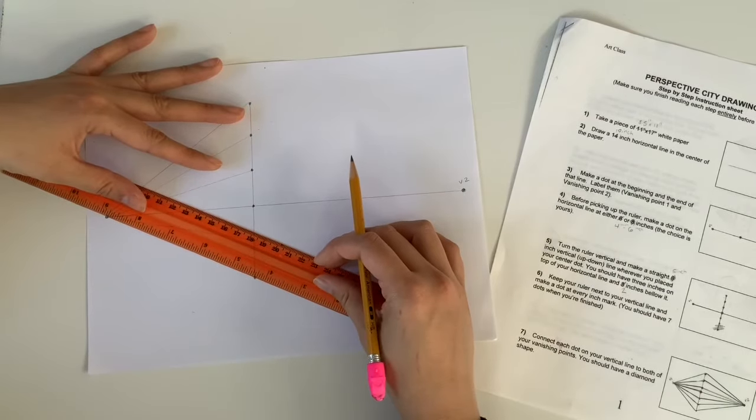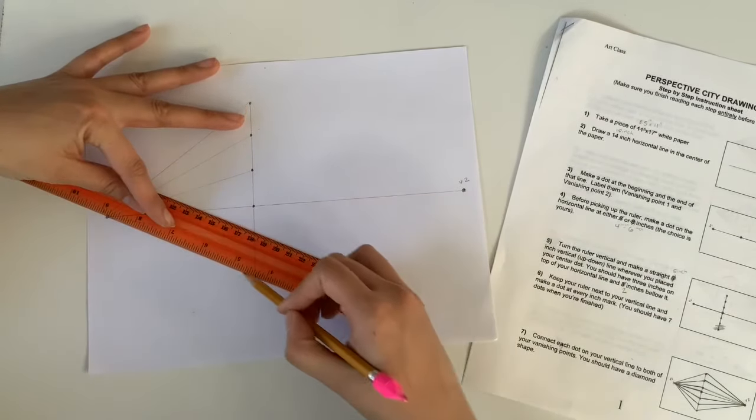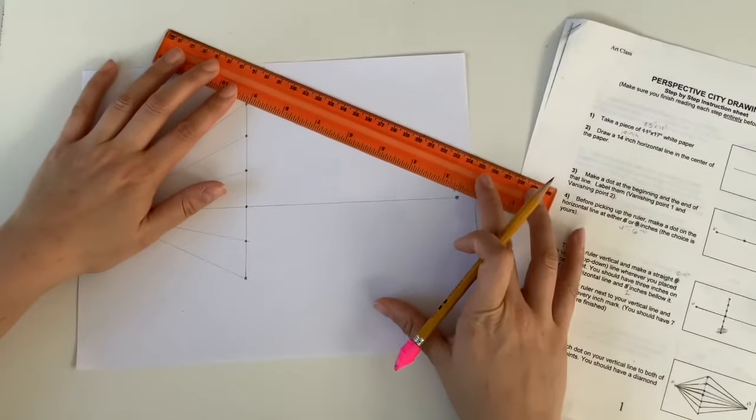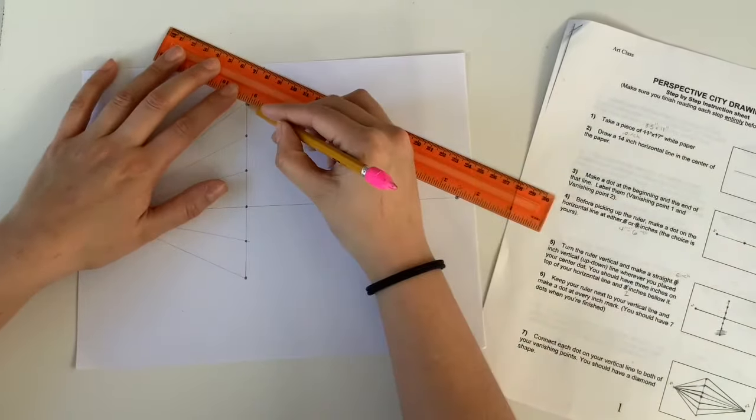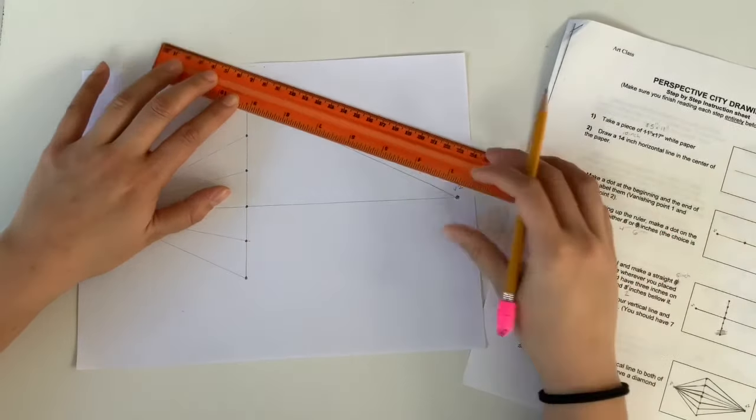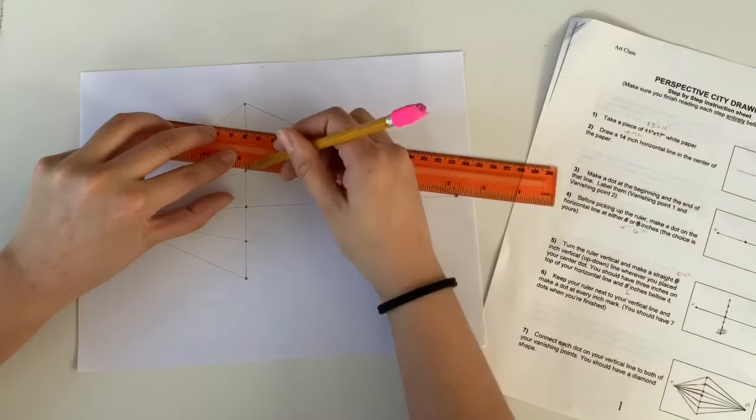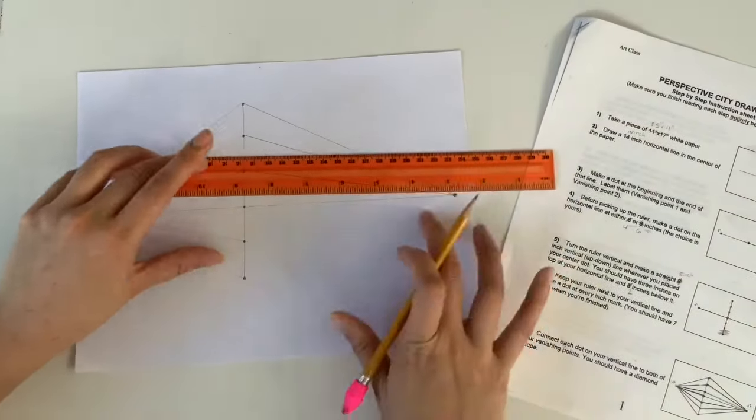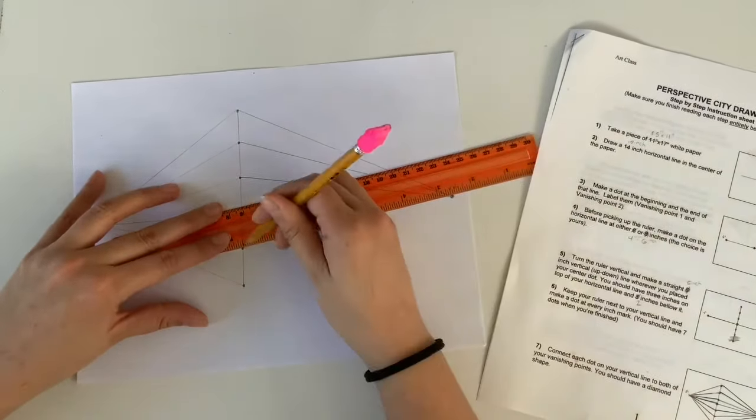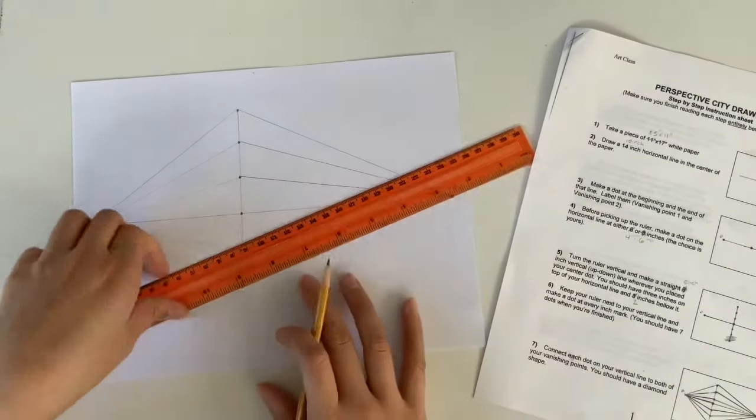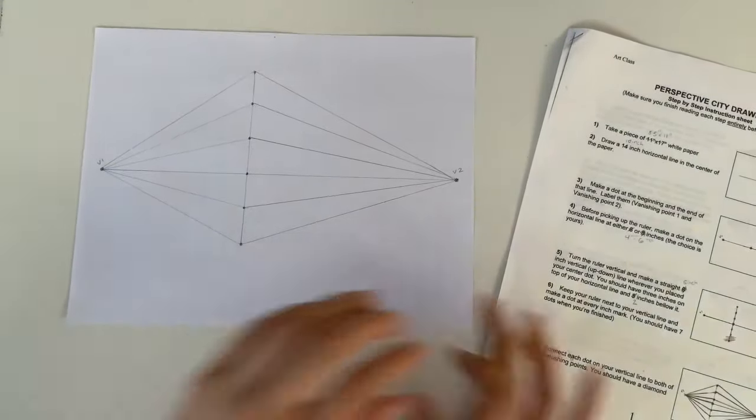I'm going to speed this next part up so feel free to pause, rewind, if you need anything repeated or you're just a little unsure about what we've done up to this point. When you're finished with this step you should have what looks like a sideways diamond with lots of lines inside. If you're following along with the step by step packet we're now moving to page two.